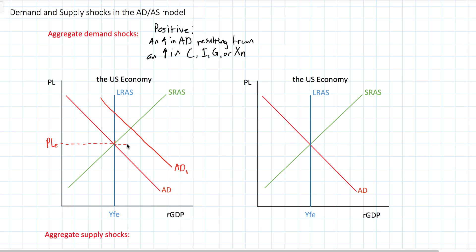If aggregate demand increases due to increased household wealth and consumption, and there is no increase in prices, there will be a quantity of output demanded that is greater than the quantity of output supplied — a shortage of goods and services. Just like in microeconomics, if there is a disequilibrium in a market, that market must adjust in the form of rising prices. Demand-pull inflation will result from a positive demand shock.